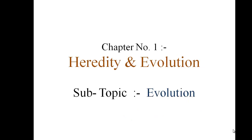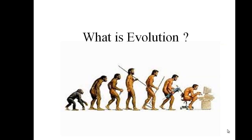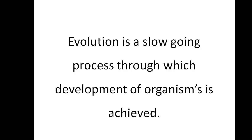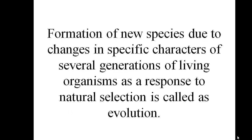In chapter number 1, the subtopic is Evolution. So what is Evolution? Evolution is a gradual change occurring in living organisms over a long duration. It is a slow-going process through which development of organisms is achieved. Formation of new species due to changes in specific characters of several generations of living organisms as a response to natural selection is called Evolution.